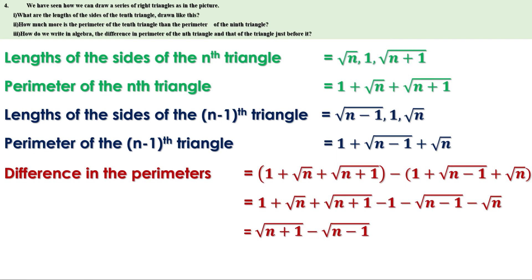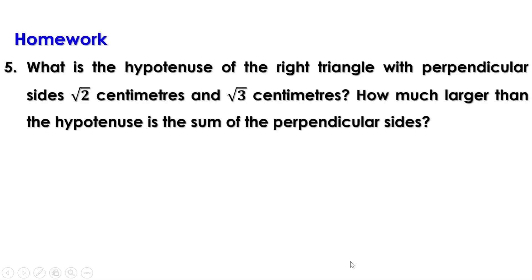Today we discussed problems on page 52. Now there is a homework: What is the hypotenuse of the right triangle with perpendicular sides √2 centimeters and √3 centimeters? How much larger than the hypotenuse is the sum of the perpendicular sides? In the next video we shall discuss the next part. Till then, bye.